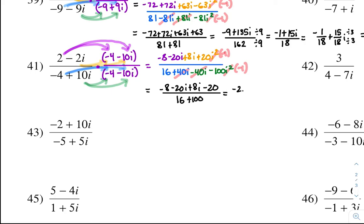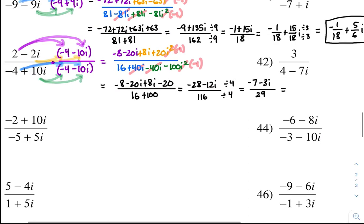Simplify the top: negative 8 minus 20 is negative 28, and negative 20i plus 8i is negative 12i. All over 16 plus 100 which is 116. You can divide top and bottom by 4: negative 28 divided by 4 is negative 7, negative 12 divided by 4 is negative 3i, and 116 divided by 4 is 29. Into standard form: negative 7 over 29 minus 3 over 29i.